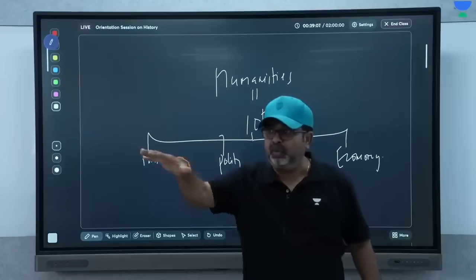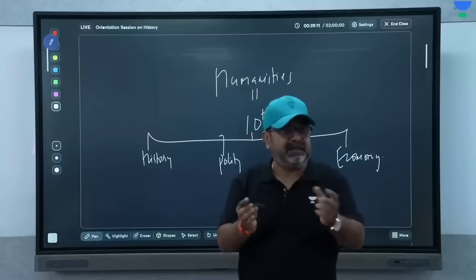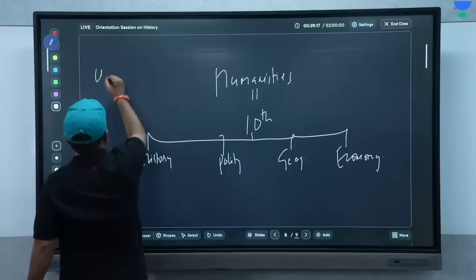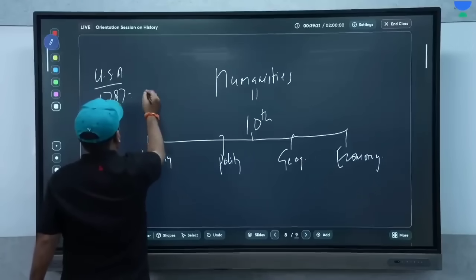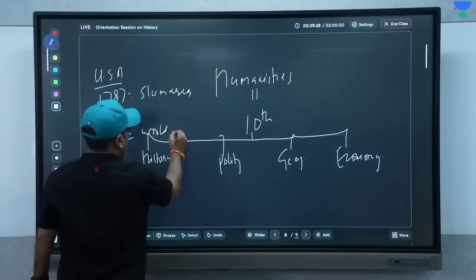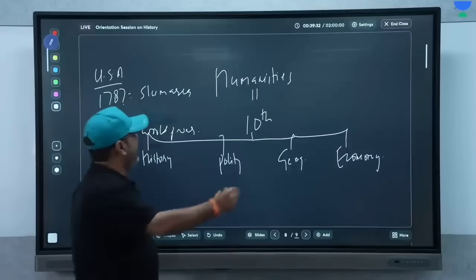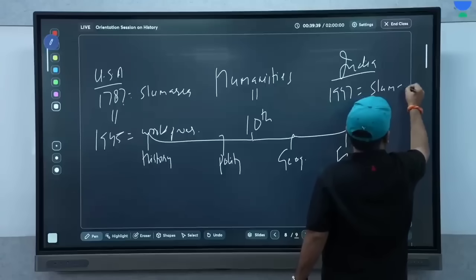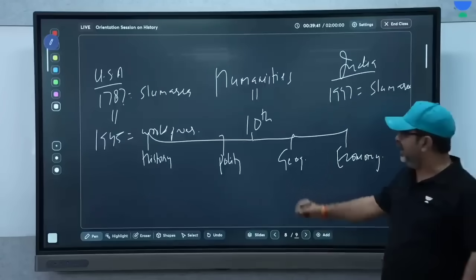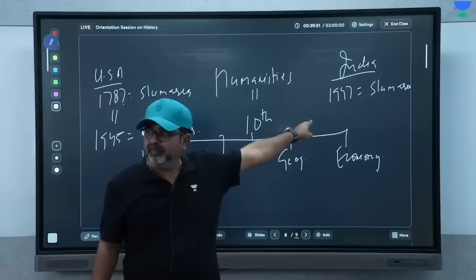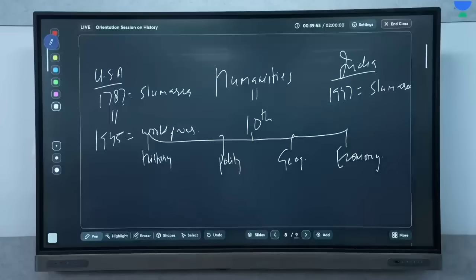So when you look at them, you look at them as a slum area. So when we were born in 1947, we found ourselves. So who were we? United States of America. This was in 1787 as a slum area. And in 1945, it became world power. So if we were born in 1947, India was born in 1947, the slum area. So if we were born in this slum area, the world power can become a slum area.